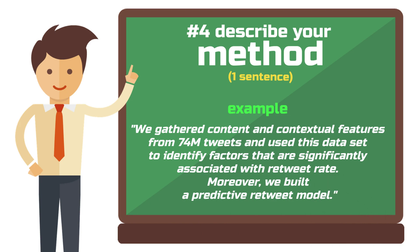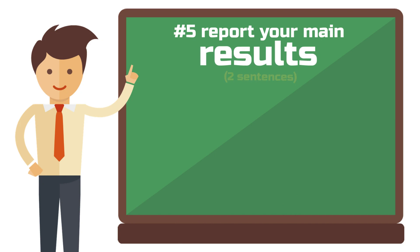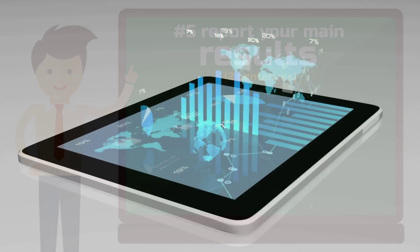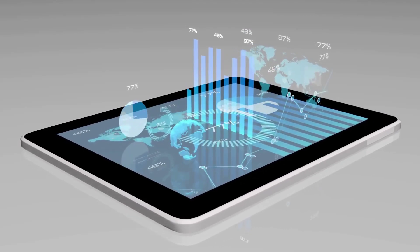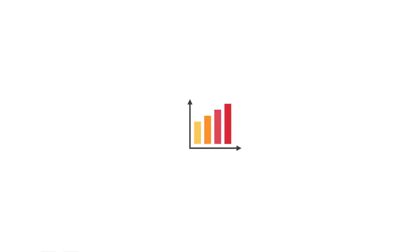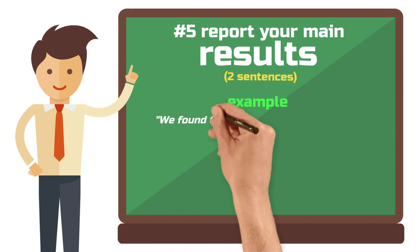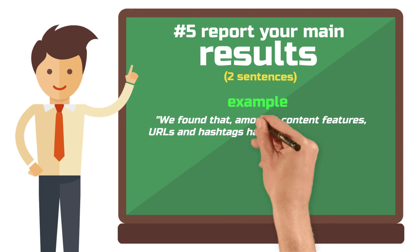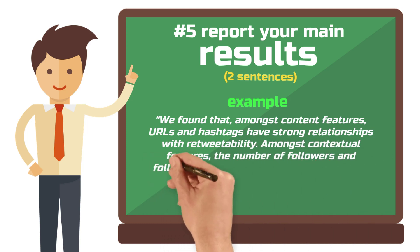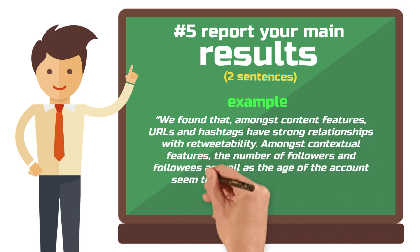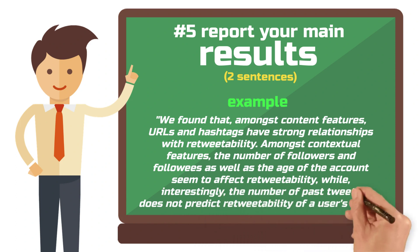We also built a predictive retweet model. Step 5: The main results — what are the key findings of your work? Two sentences. Remember that the abstract is not a teaser but should include everything there is to know about the study. You should be able to summarize the essence of your results in two very concise sentences. For the results, you could write: 'We found that, among content features, URLs and hashtags have strong relationships with retweetability. Among contextual features, the number of followers and followees as well as the age of the account seem to affect retweetability, while interestingly, the number of past tweets does not predict retweetability of a user's tweet.'